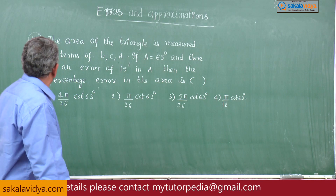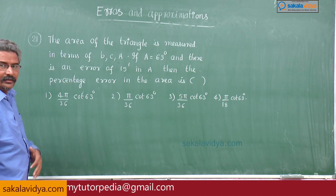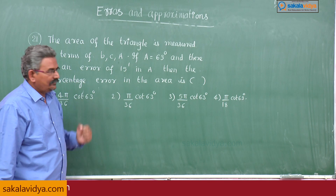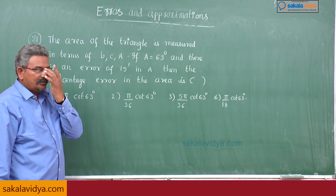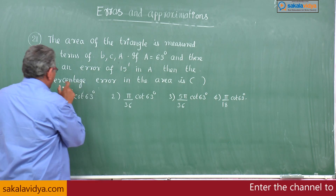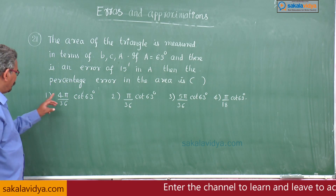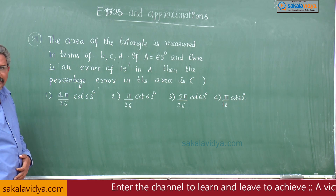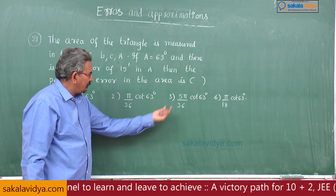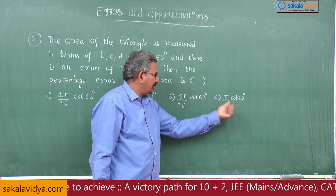Let us go to problem number 21. The area of a triangle is measured in terms of sides b, c and angle A. If A is equal to 63 degrees and there is an error of 15 minutes in A, then find the percentage error in the area of the triangle. Options: 4π/36 cot 63°, 5π/36 cot 63°, 5π/36 cot 63°, or π/18 cot 63°.